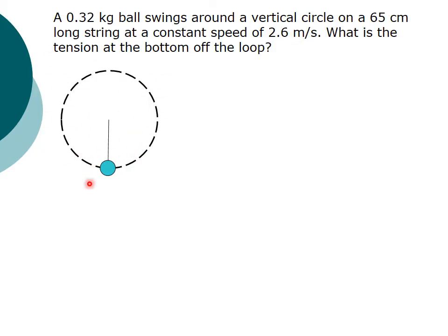They're doing something to keep this ball always going the same speed. I don't know how, but somehow magically in the problem, that's what's going on. And the question is, what is the tension at the bottom of the loop?